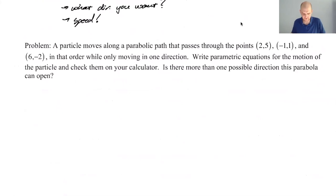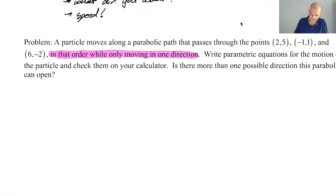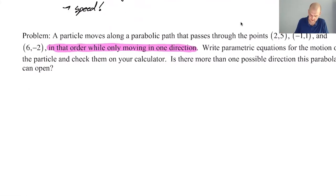So let's see this. New problem. Particle moves along a parabolic path, passes through the points (2,5), (-1,1), and (6,-2) in that order, while moving in one direction. So we want to write parametric equations for the motion of the particle and check them on your calculator. Is there more than one possible direction this parabola can open? I don't know. Let's see. So I think a decent graph is probably called for, like not perfect, but at least the correct relative positions, probably.